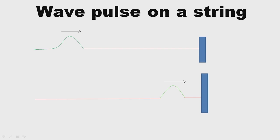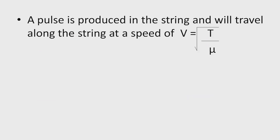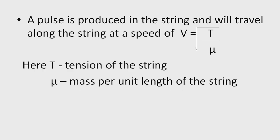A pulse is produced in the string and will travel along the string at a speed of v = √(T/μ). We can calculate the speed of the pulse using this expression, where T is the tension of the string and μ is the mass per unit length of the string.